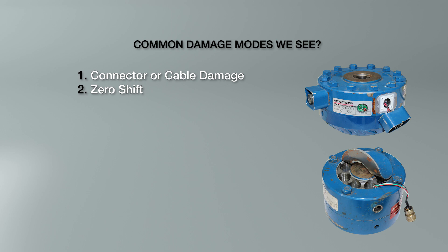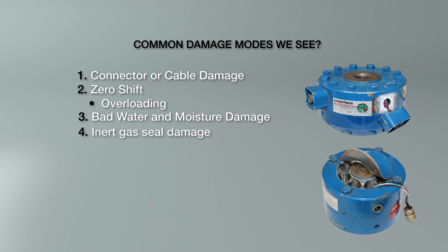What is an overload? It's a deformation of the sensing element. If you pass the yield point of the load cell sensing element, this results in a permanent deformation. Number three: water and moisture damage. That often manifests as low insulation resistance and would also be seen as a drifting or noisy signal. With your load cell plugged into your instrumentation, you might see the zero moving around or the signal is just not stable. Interface load cells that have an inert gas seal can have that seal damaged or lost, and it needs to be replaced.